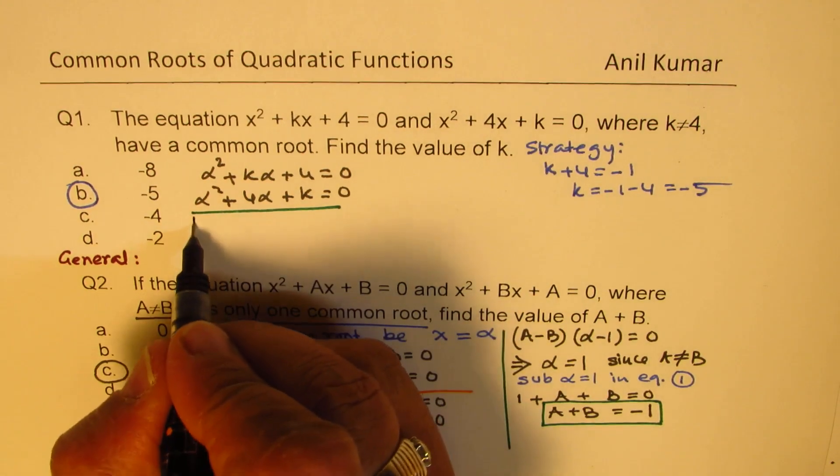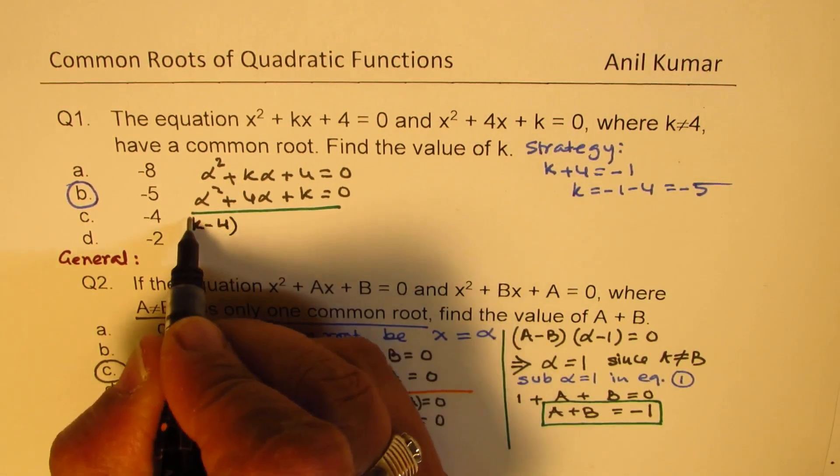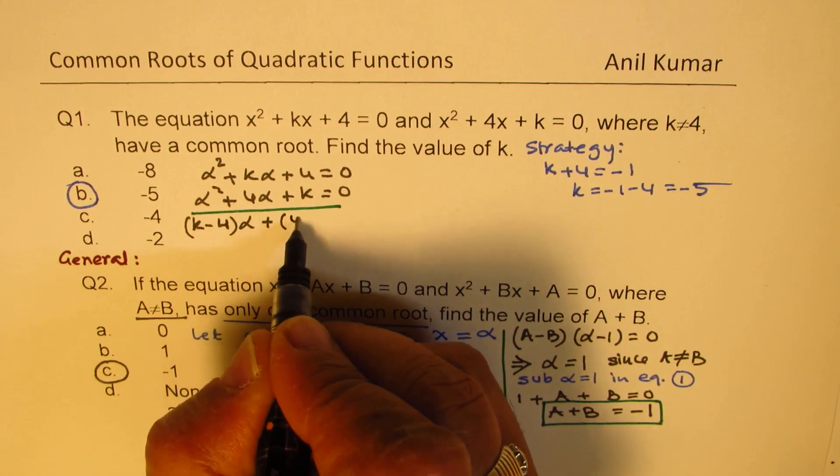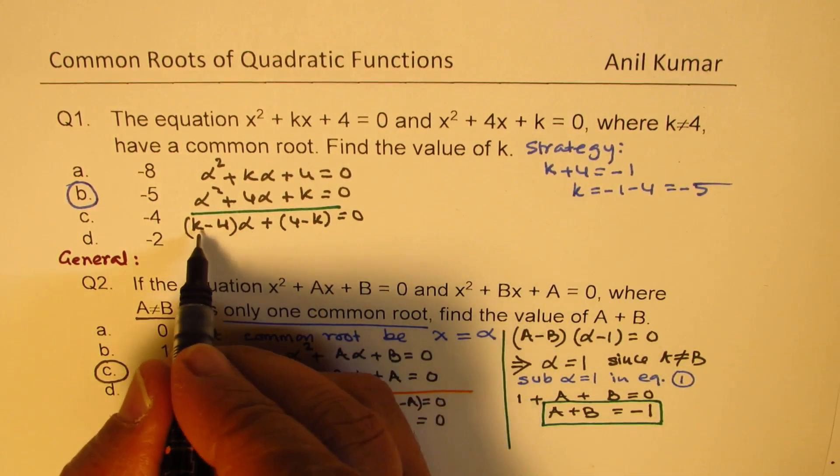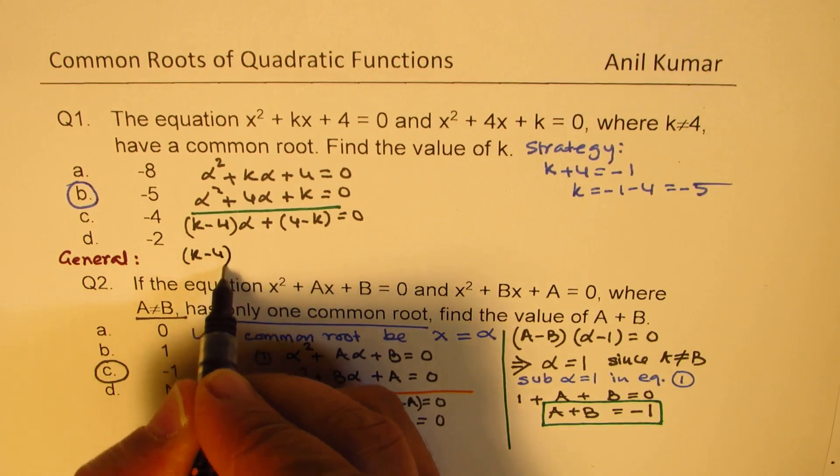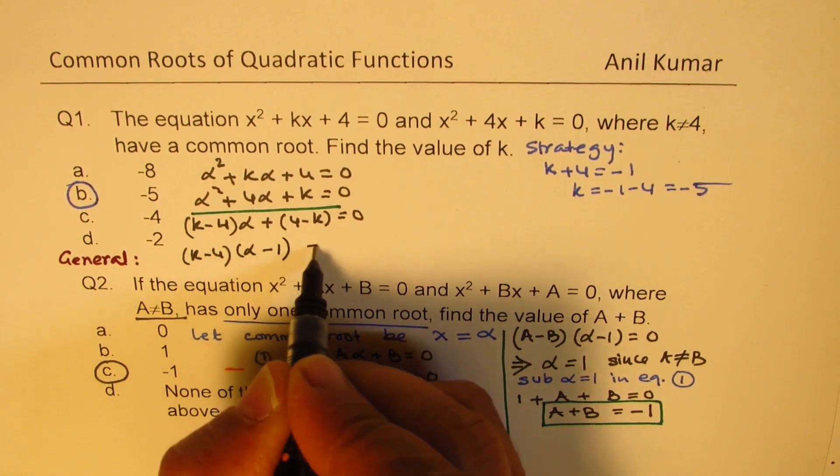you get (k - 4) times α + (4 - k) = 0. And you can always factor (k - 4).